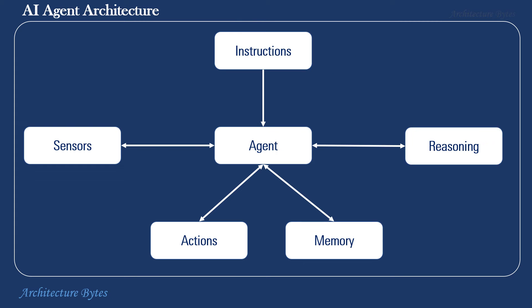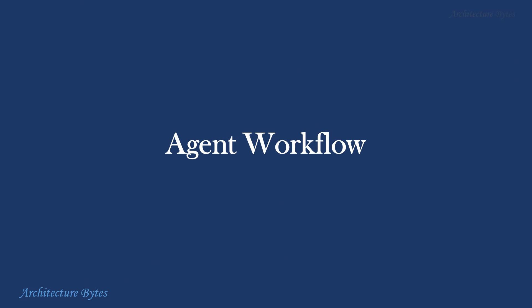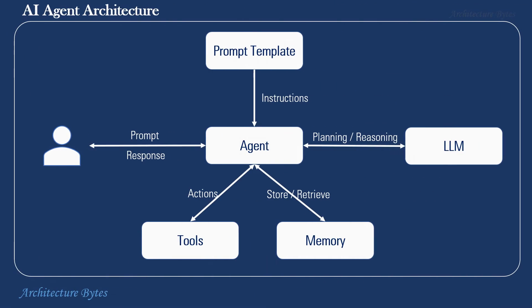Remember that AI agents can perceive their environment through sensors such as cameras or microphones — a text prompt is not the only way for it to receive inputs. Now let's go over an agent workflow to understand how it functions.